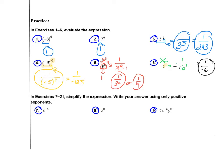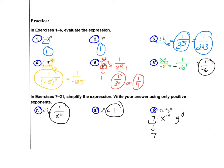Here we have to simplify the expression and write the answer using positive exponents. The negative exponent tells me to move the location of the base, so instead of being on top as x to the 6th, it goes to the bottom. z to the 0 power is 1, since anything to the 0 power is 1. I like to expand it as multiplication of separate pieces: the number 7 stays, x to the 4th moves to the bottom due to its negative exponent, giving a final answer of 7 over x to the 4th.